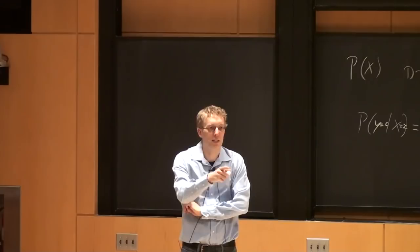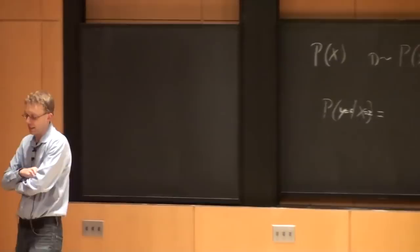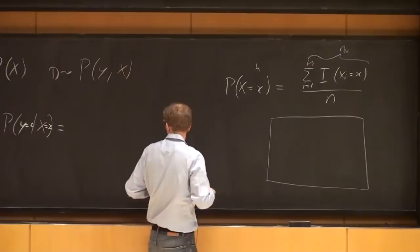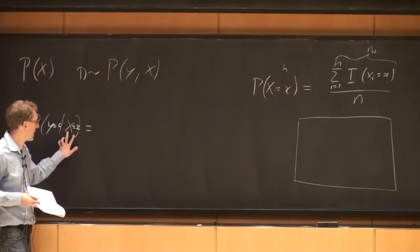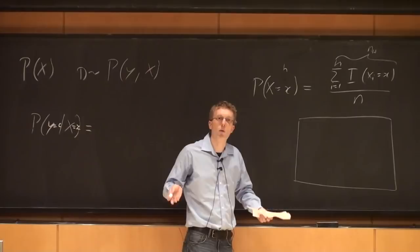A student answers: you look at all values where x is equal to the given x, and then over that set you find the ones that have the y you're looking for and divide. Exactly right. What we're saying is: we want to condition y on x equals little_x. It's not very different from the coin toss — except now we only look at the cases where x equals little_x.